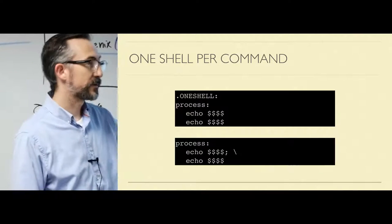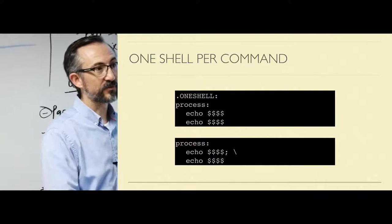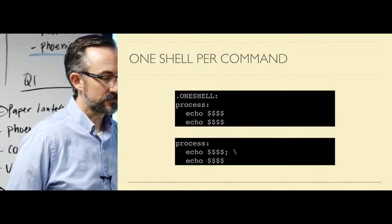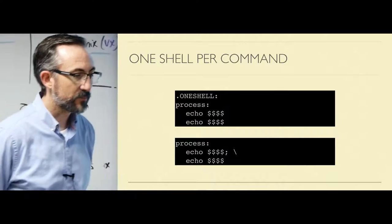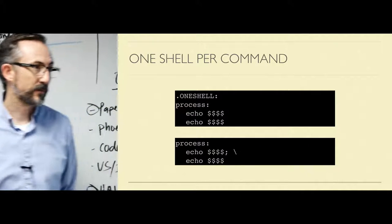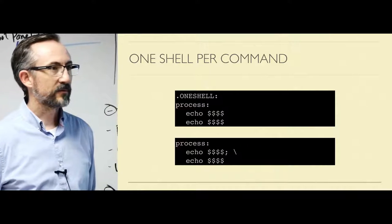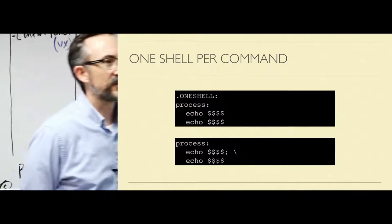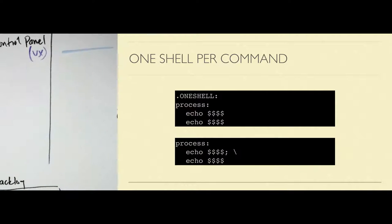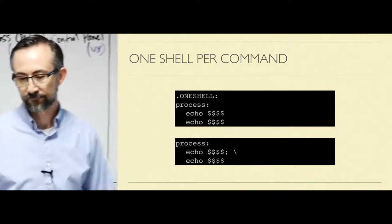What Make does is it does a little bit more processing — it takes that backslash-newline, removes it, and concatenates those strings so that they will run in the same shell. The question is: does .ONESHELL apply to just the one target or all targets in the file? It applies to all targets in the file. Another reason why you might want to avoid it. I've never had really good luck getting it to work consistently. You set this at the top of your Make file, and it's just used once.